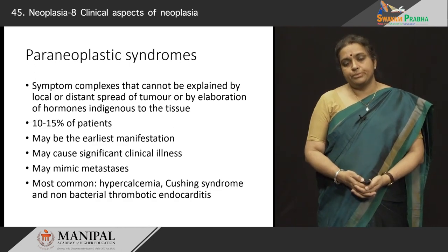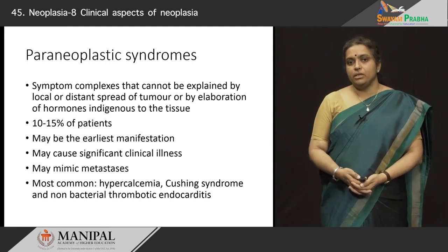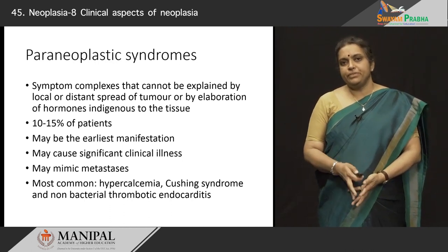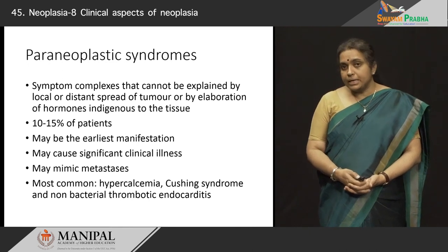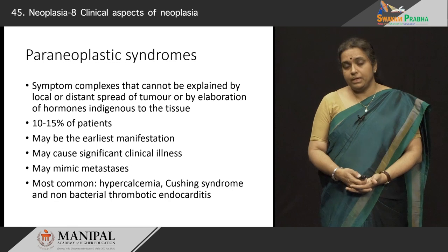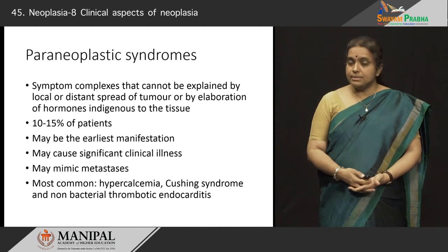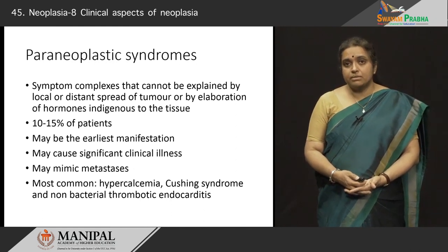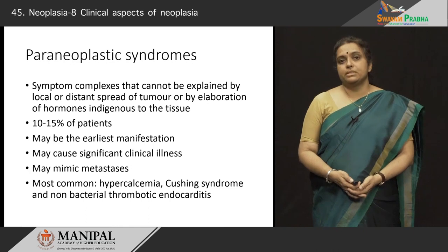What are paraneoplastic syndromes? These are peculiar to neoplasia wherein you have symptom complexes that cannot be explained by the local or distant spread of tumor or by elaboration of hormones indigenous to the tissue. The classical example is lung cancer or squamous cell carcinoma of the lung — this causes hypercalcemia and Cushing syndrome. The lung is not the site for elaboration of ACTH or cortisols, but the cancerous lung tissue starts producing steroid hormones which leads to Cushing syndrome. These are seen in about 10 to 15 percent of cancer patients.